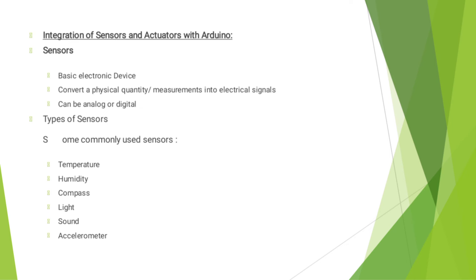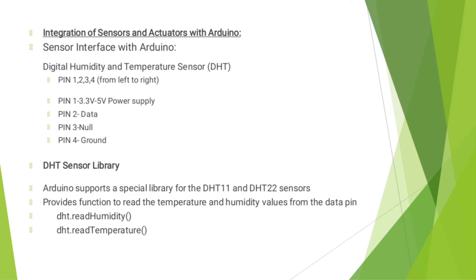Some commonly used sensors are temperature, humidity, compass, light, sound, and accelerometer. Sensor interface with Arduino — here we look at the DHT sensor, that is the Digital Humidity and Temperature sensor.